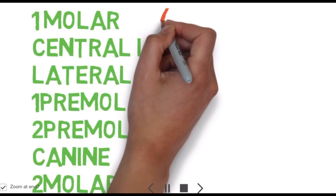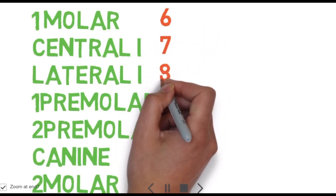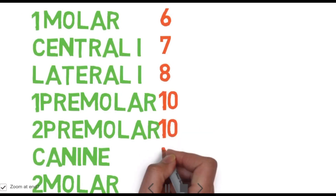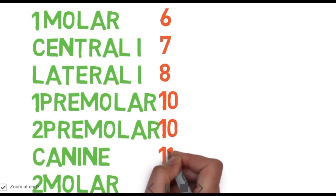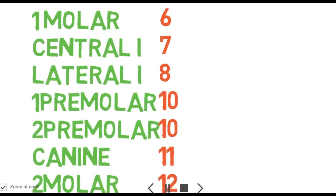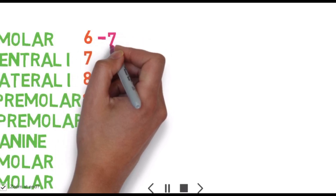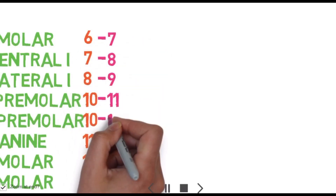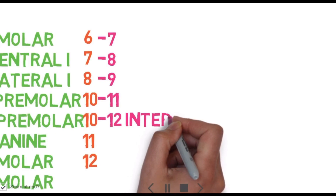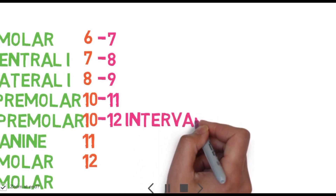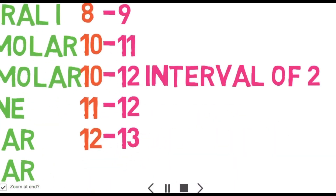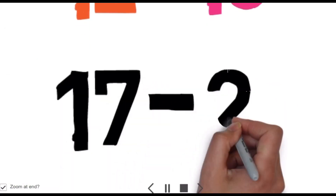The first tooth erupts at age six years. We write the numbers as 6, 7, 8 — skip 9 — then 10, 10 again, 11, and 12. Now I will add one to each number: giving 7, 8, 9, 11 — except for the second premolar which gets an interval of two — then 12, 13, and the last molar at 17 to 21.